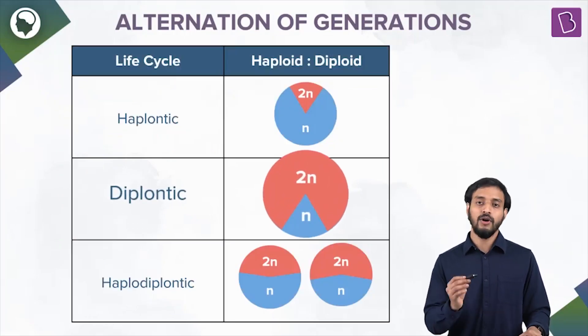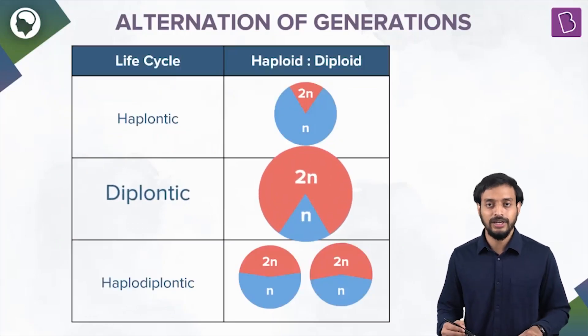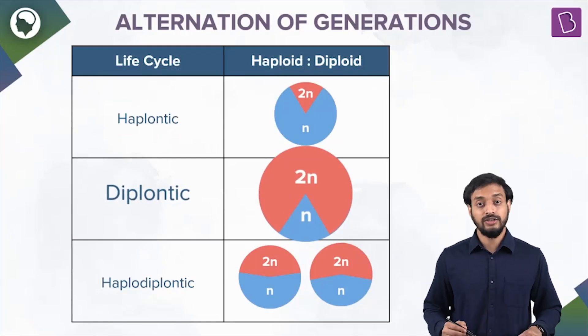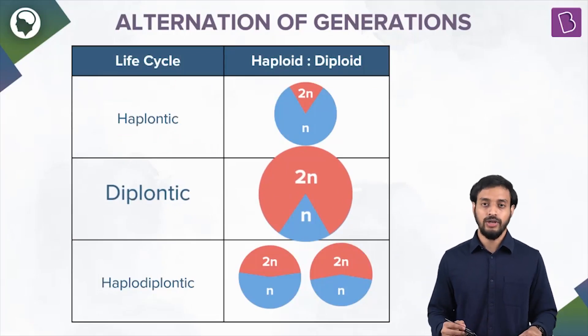In the diploid lifecycle, the sporophytic stage is the dominant stage.